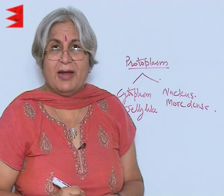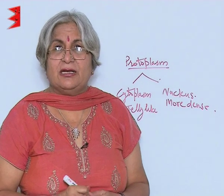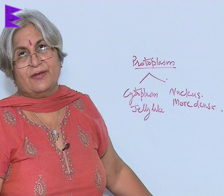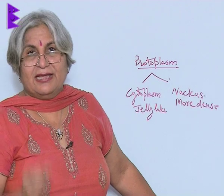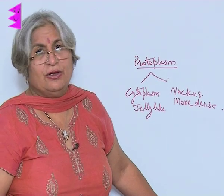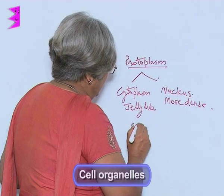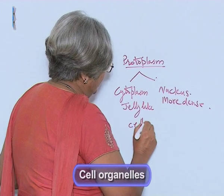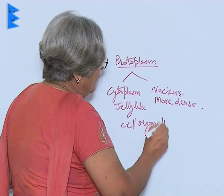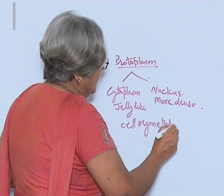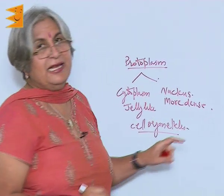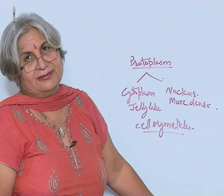The cytoplasm is not a homogeneous mass of jelly-like substance — there are subcellular parts also, which are called cell organelles. So what we need to study next is about cell organelles and the nucleus.